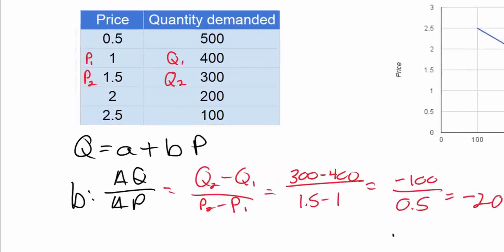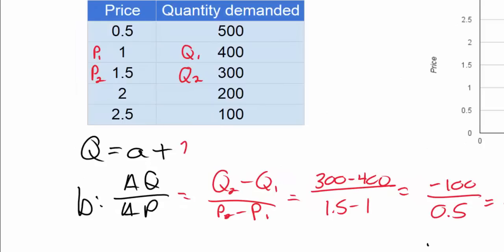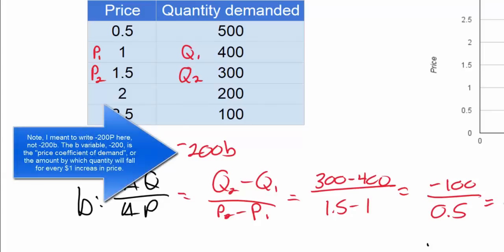So we can now plug that in to our equation here. Qd quantity equals a plus negative 200 times P. There's an important point to make here.